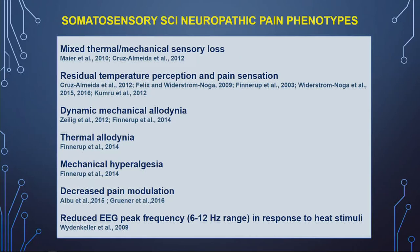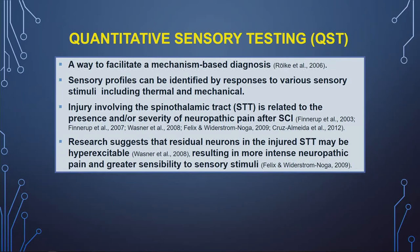One approach is to look at neuropathic pain phenotypes — classifying people based on their sensory profiles. This has been done by our lab and others. One method used extensively for this is quantitative sensory testing, or QST. Using this method, you can identify sensory profiles including thermal and mechanical types of stimulation.